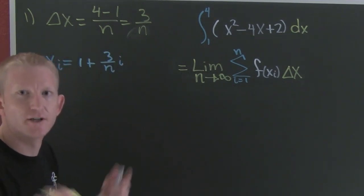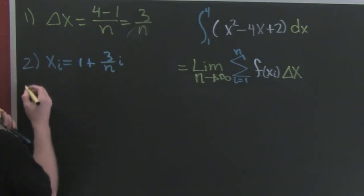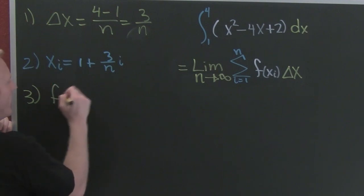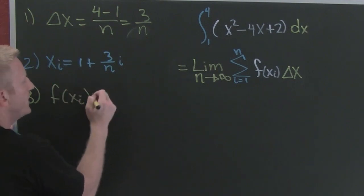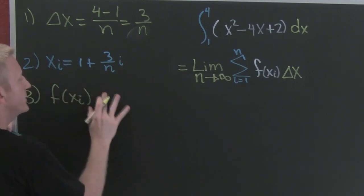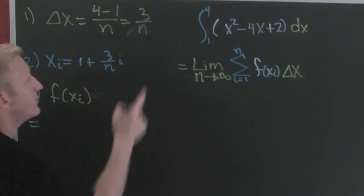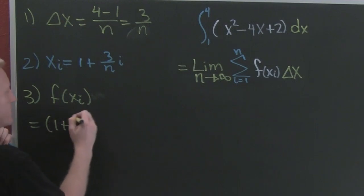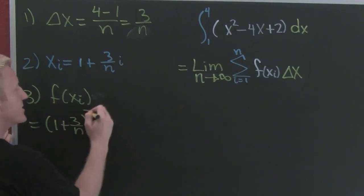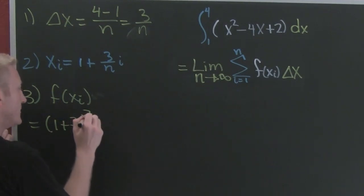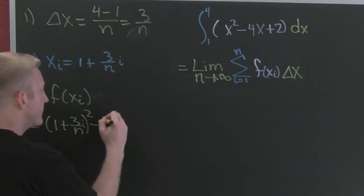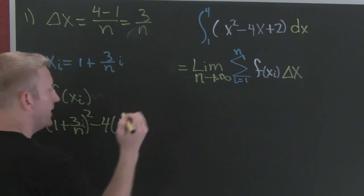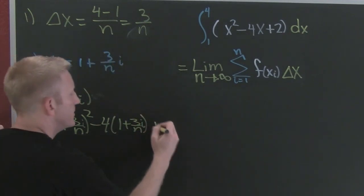Now I want to evaluate f of xi because we're chunking this. Everywhere I see an x, I'm going to substitute xi. So I have (1 + 3i/n) squared, then minus 4 times (1 + 3i/n), plus 2.